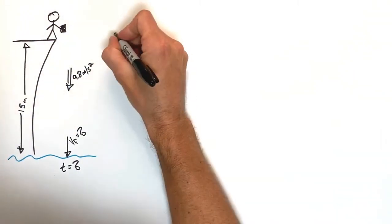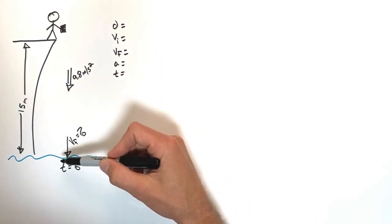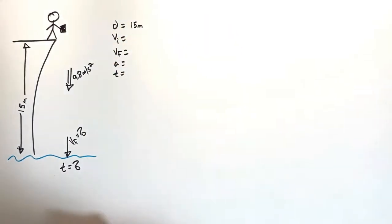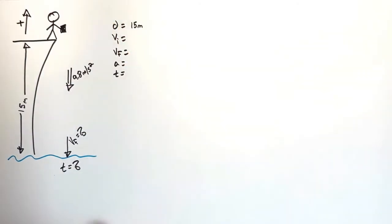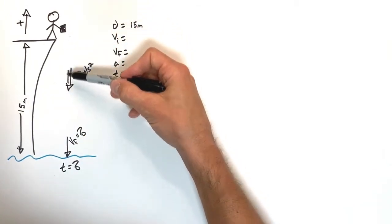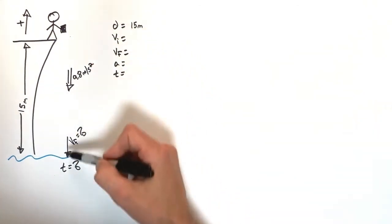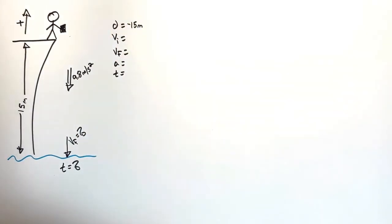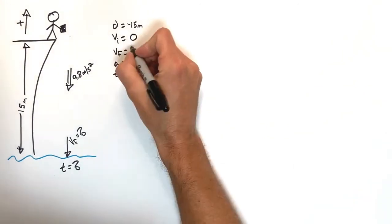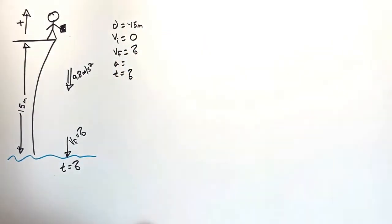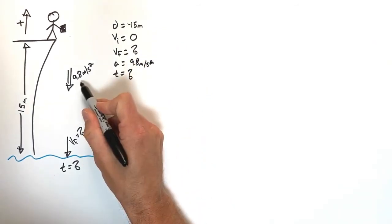Just like usual, we're going to set up our five kinematic variables. Looking at the displacement, we know the block is going to move down 15 meters. In any freefall problem, we adopt the convention that up is positive. So the displacement as the block moves downward is negative 15 meters. This block is simply being dropped from rest, meaning the initial velocity is zero. We're trying to solve for the final velocity and time. The acceleration is 9.8 meters per second squared, and since it's downward, it's negative.